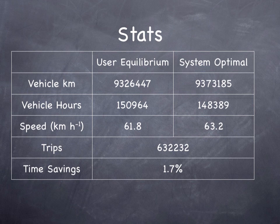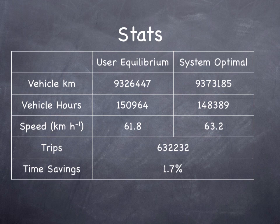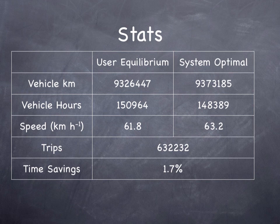We also looked at system-wide performance measures. Total vehicle kilometers traveled, or VKT, was somewhat higher in the system optimal situation because people had to go slightly farther to save time on faster routes. But it had fewer vehicle hours of travel, VHT, and a slightly higher average network speed of 63.2 km per hour versus 61.8. The average travel time savings was 1.7%. From my perspective, a 1.7% increase in travel time associated with selfishness is not actually very bad, and suggests that decentralized decision-making gets you very close to the optimal situation. But different networks and more congested cities might have different results.